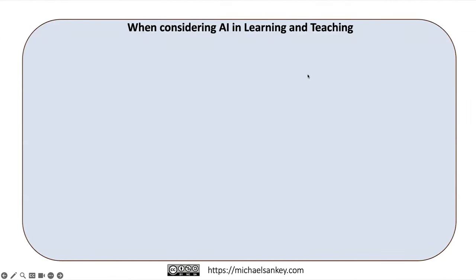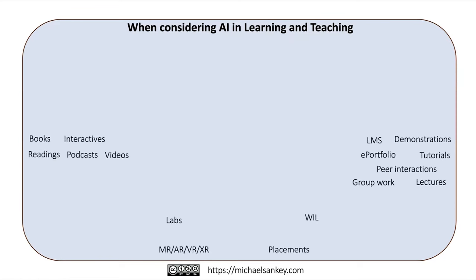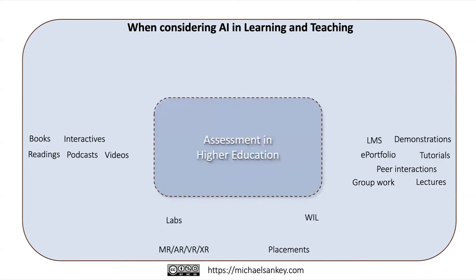We're considering AI and learning and teaching. This affects all areas of learning and teaching as we think about the different types of technologies and the different types of approaches we have. Of course, we've had books and interactives, readings, podcasts, videos, LMSs, e-portfolios, et cetera, for quite a while now in the online space. But now we're starting to think: how does AI affect these things? Probably most importantly over the last 18 months has been the effects on assessment and this notion of authenticity, particularly if we do exams and essays and things like that.